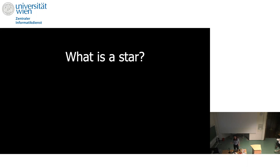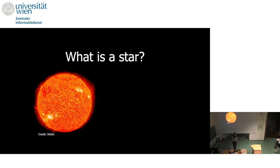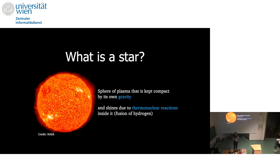Which is the closest star to us? Our sun — this is the closest star and the one we know best because it's so close that we can have a level of information we cannot pretend to have with any other star. A star is a sphere of plasma, of gas that is compacted by gravity. Gravity is what makes this gas and plasma stay together and not disperse into the rest of the galaxy. And the other important property is the reason why stars shine: their interiors are really hot and constantly nuclear reactions are ongoing, and the power of these nuclear reactions arrives to us in the form of light.